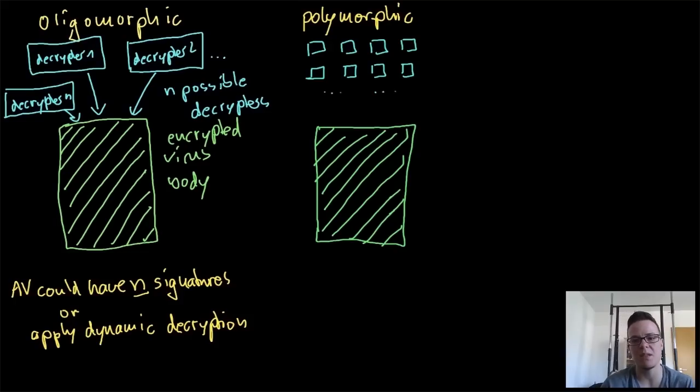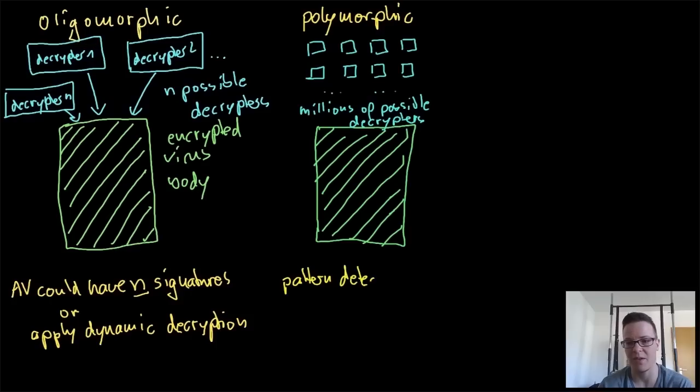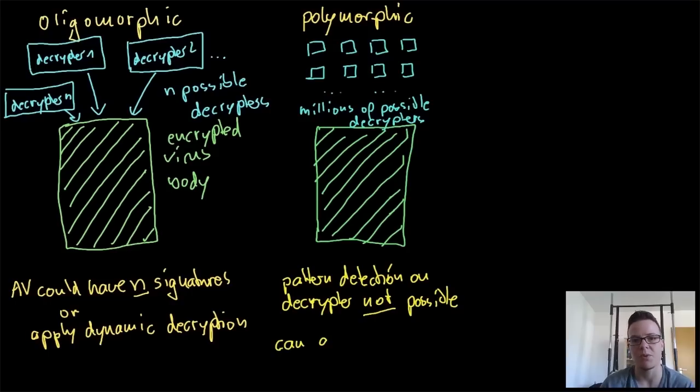It would be millions of possible decryptors, and they achieved this by modifying the decryptor. Some viruses would actually look for compilers on the system they infect, have the source code in the virus body, then change the source code and recompile it for the decryptor so it looks very different every time they create a new generation.